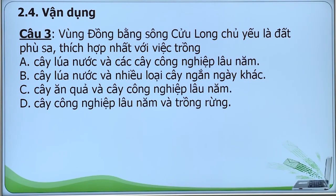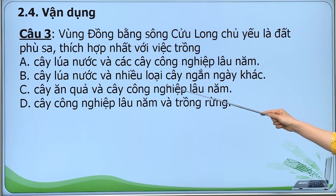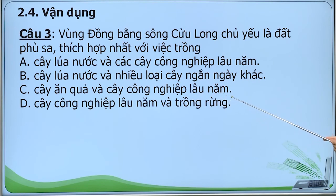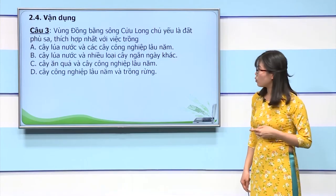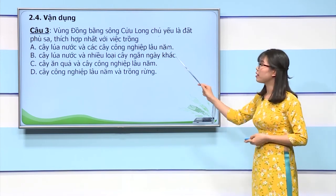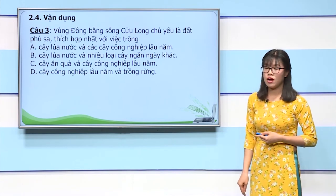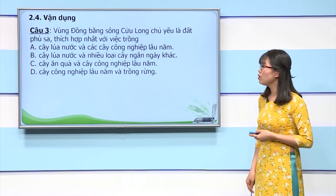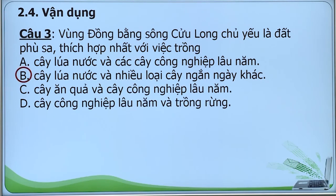Câu 3: Vùng đồng bằng sông Cửu Long chủ yếu là đất phù sa thích hợp nhất với việc trồng: A. Cây lúa nước và cây công nghiệp lâu năm; B. Cây lúa nước và nhiều loại cây ngắn ngày khác; C. Cây ăn quả và cây công nghiệp lâu năm; D. Cây công nghiệp lâu năm và trồng rừng. Đề bài đã gợi ý đồng bằng sông Cửu Long có chủ yếu là đất phù sa. Mà đất phù sa thích hợp với các cây lúa nước và cây ngắn ngày. Đáp án B.